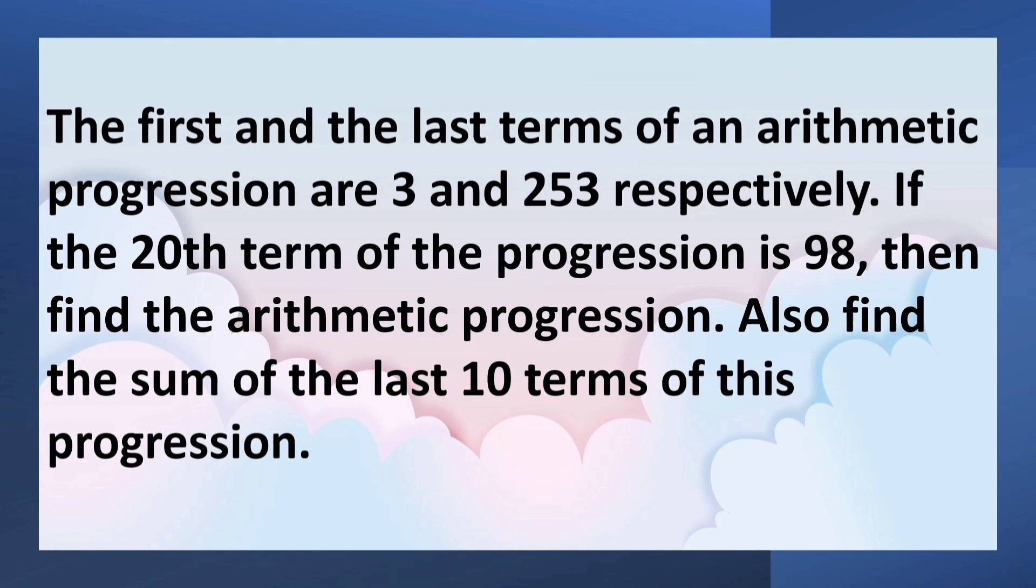The first and last terms of an arithmetic progression are 3 and 253 respectively. If the 20th term of the progression is 98, then find the arithmetic progression. Also find the sum of the last 10 terms of this progression.